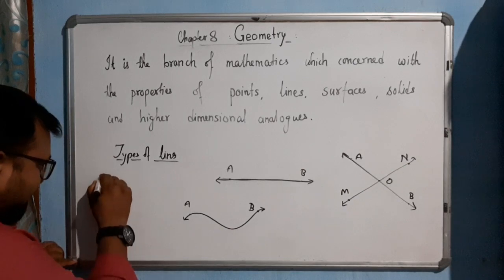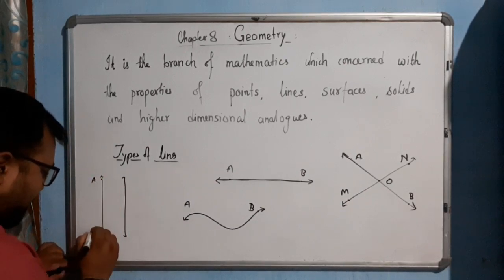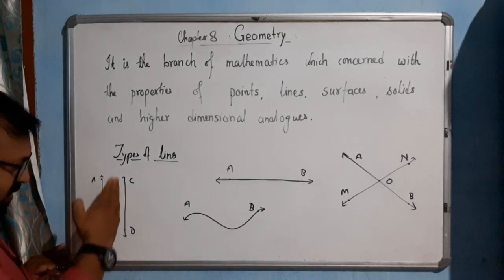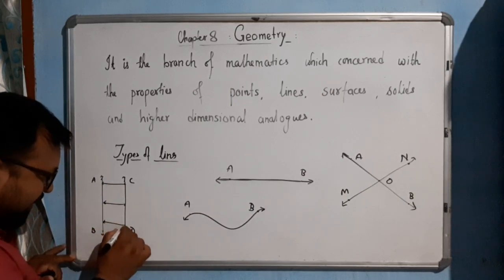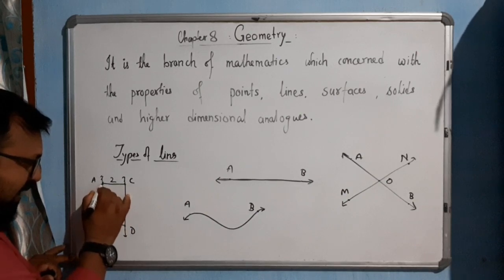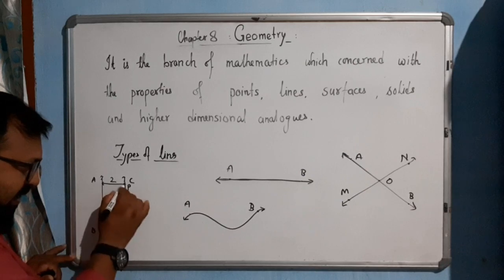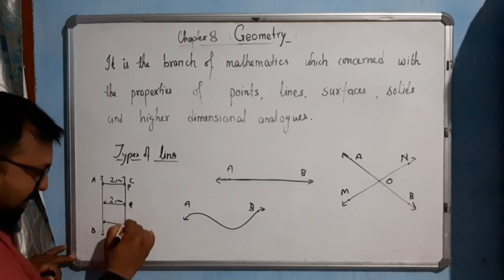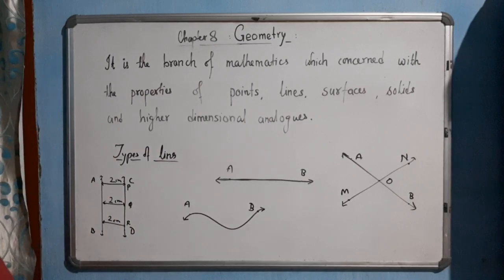When two lines — say line AB and line CD — have the same vertical distance between them at every point, they are said to be parallel lines. For example, if at point P the distance is two centimeters, at point Q it is also two centimeters, and at point R it is also two centimeters, then lines AB and CD are parallel lines.